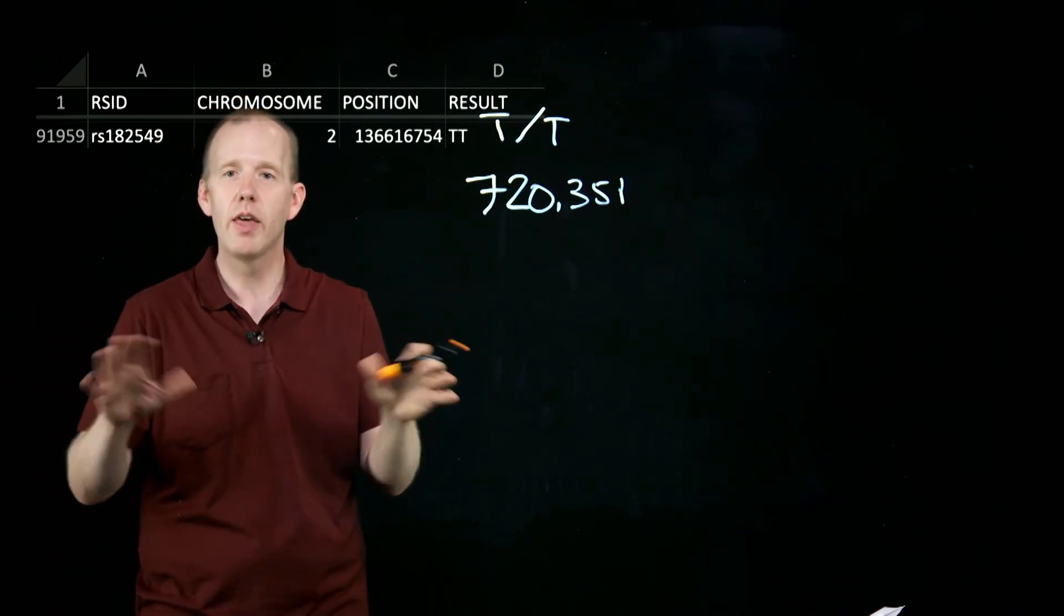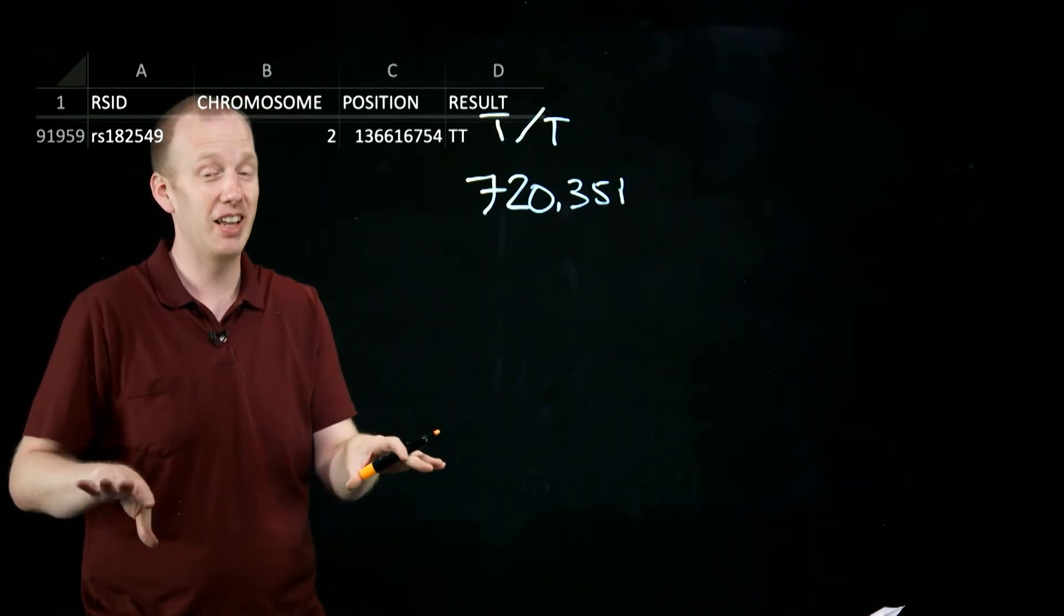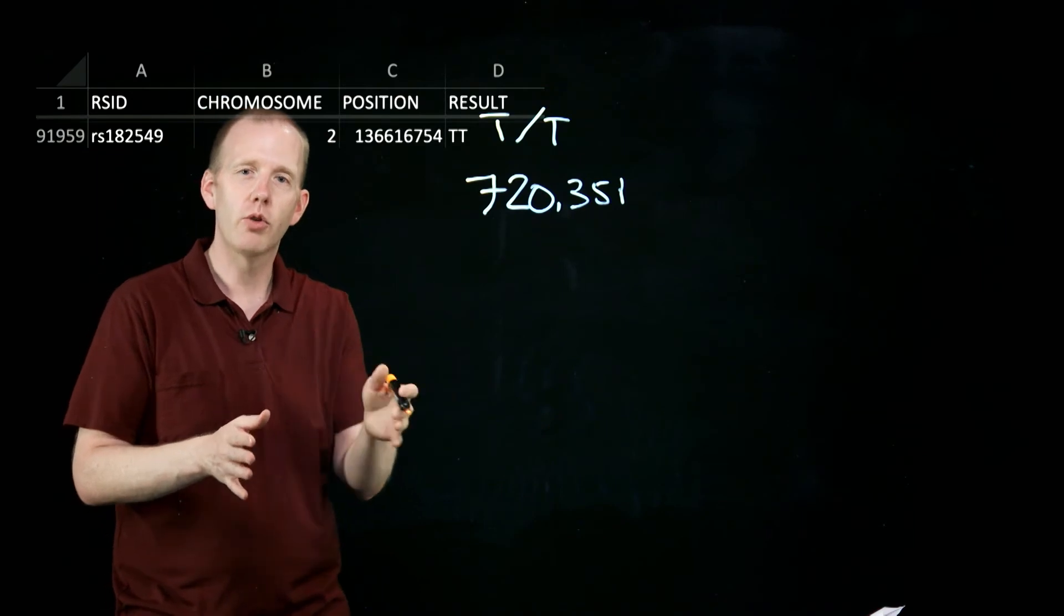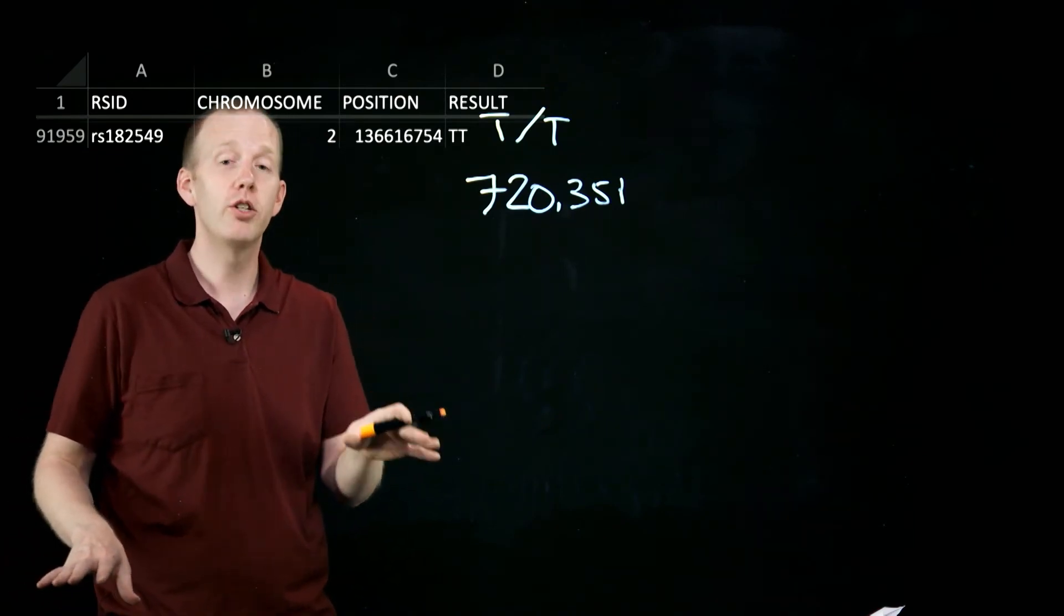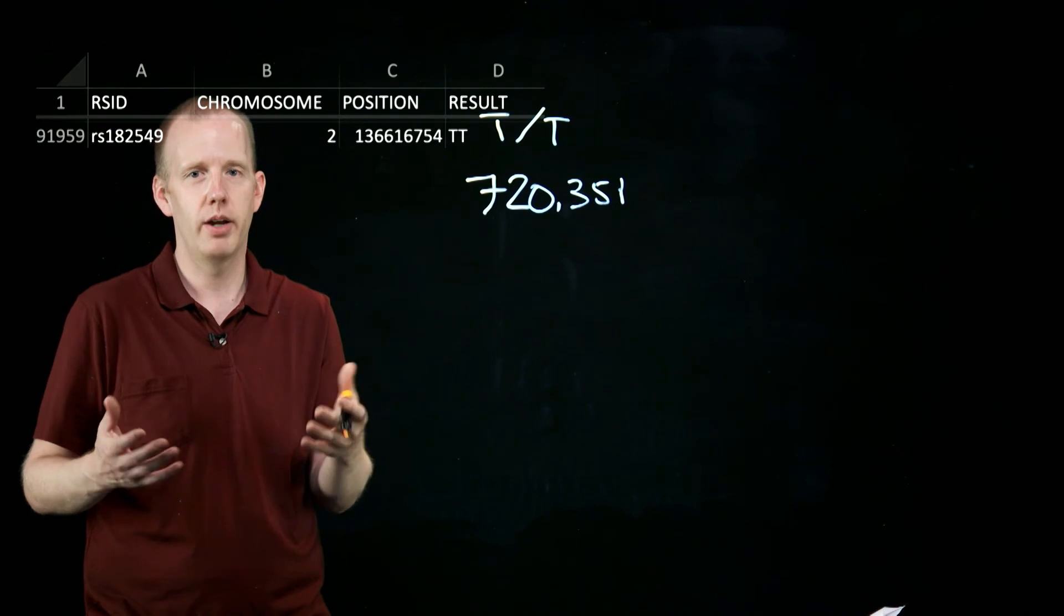So they took all of my DNA, they threw out all of the data, or they didn't even collect the data, that are those parts of the chromosome that are identical pretty much no matter which human you look at, what race, what ethnicity.